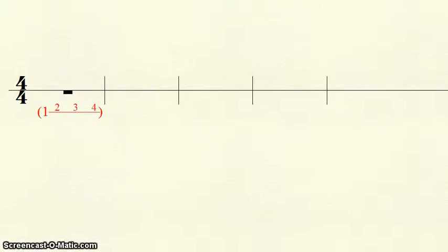Whole rests receive four beats and look like a hole in the line. Just like with half rests, we will write the first beat and draw a line. We then write the second, third, and fourth beats on the line. Again, since it's a rest, we put the whole thing in parentheses.